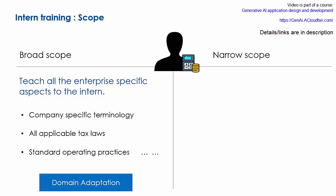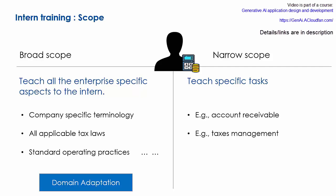On the other hand, if the intern is being trained for specific tasks like handling accounts receivable or managing taxes, their training would have a narrow scope. This is similar to instruction fine-tuning of LLMs, where the model is fine-tuned to excel at specific tasks rather than general ones.